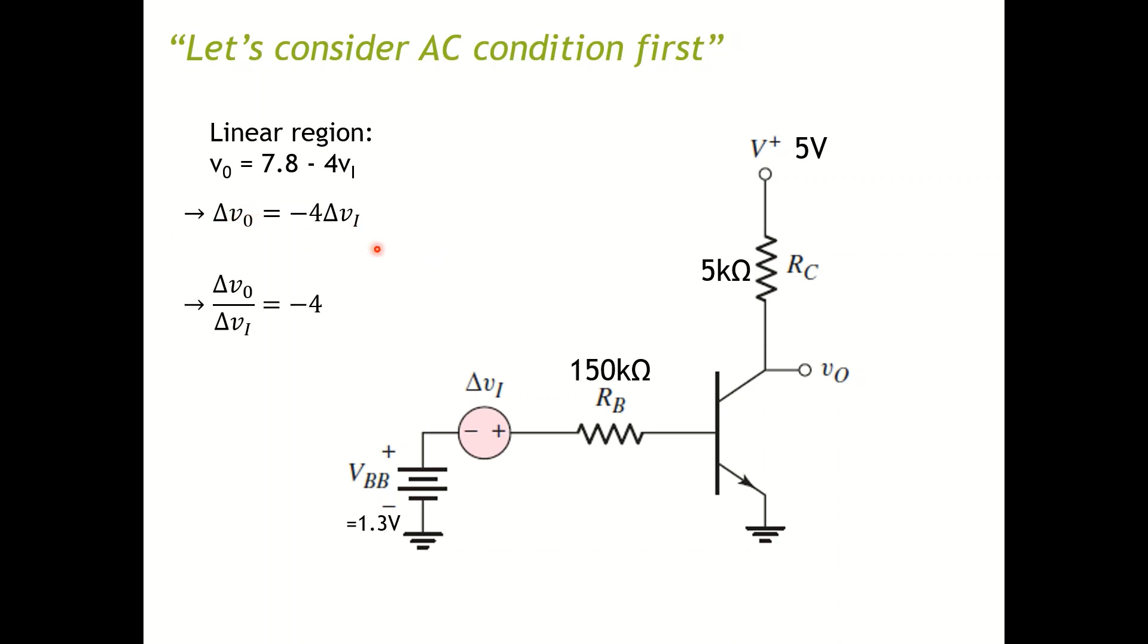So now we're going to the end. If you want to calculate the amplification factor, basically you have delta VO divided by delta VI will be equal to minus 4, and minus 4 is our amplification factor. So in this example, we have a circuit, we analyze everything, then we have the amplification factor.